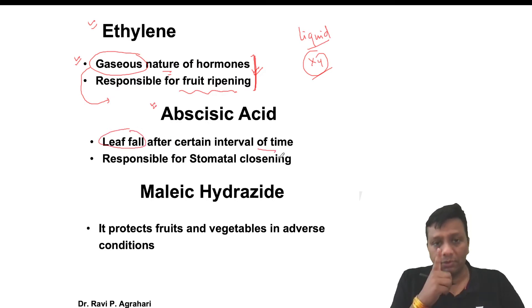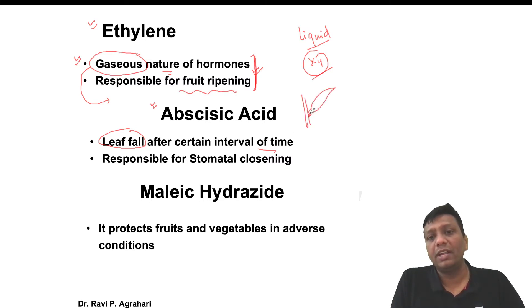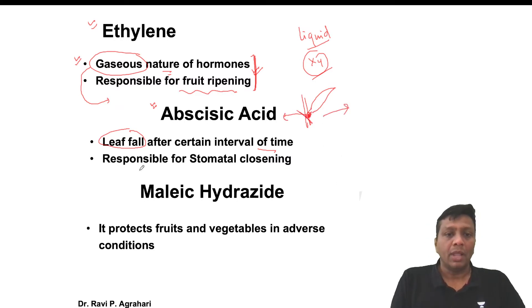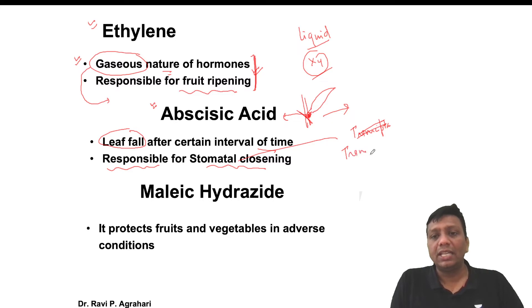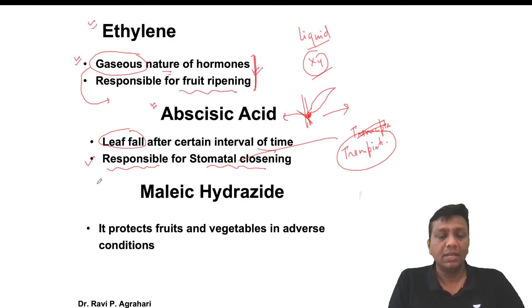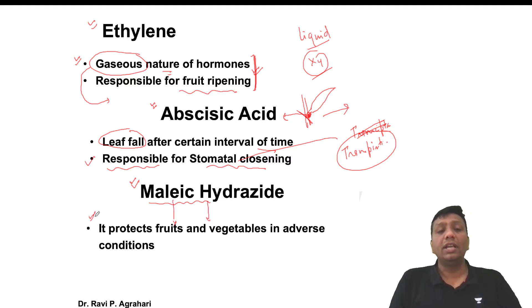The next hormone is abscisic acid. Even when plants shed their own leaves after a certain interval of time, abscisic acid formation happens at the area where the leaf is attached to the stem - it becomes loose and the leaf separates. Stomata are responsible for transpiration, and stomatal closing also happens due to the presence of abscisic acid. Malic acid is the hormone that protects plants in adverse conditions, protecting fruits and vegetables.